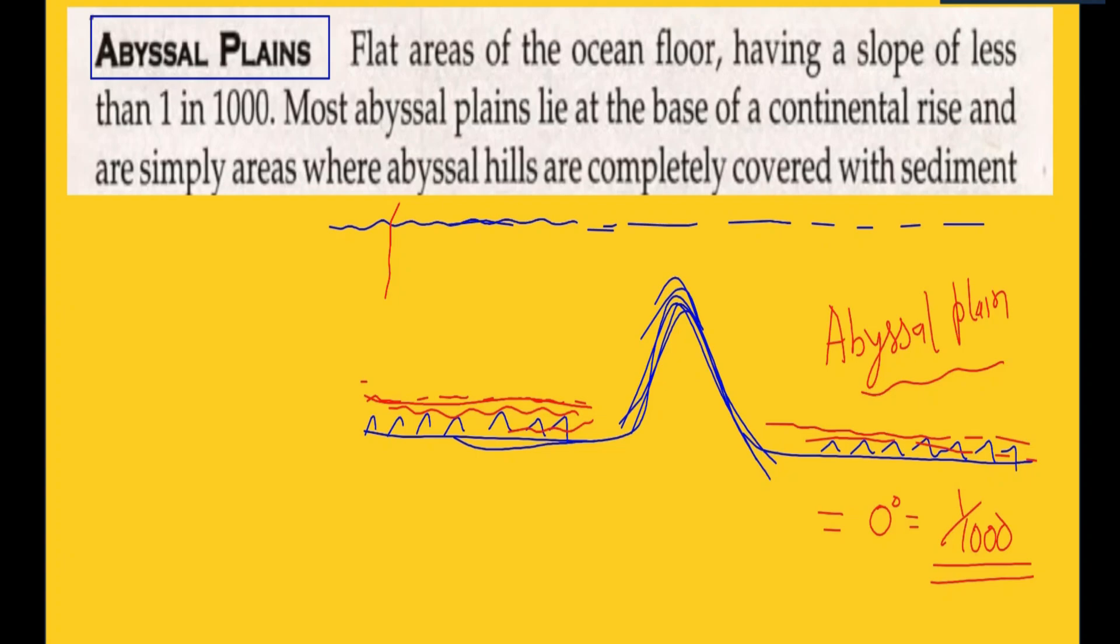...the slope is only one upon a thousand, which means near to zero degrees. Abyssal plains are flat areas of the ocean floor having a slope of less than one in a thousand, and most abyssal plains lie at the base of a continental rise.